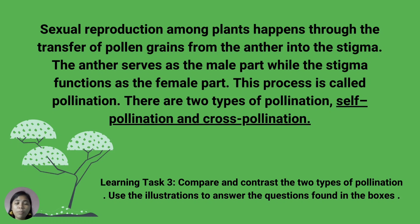Sexual reproduction among plants happens through the transfer of pollen grains from the anther to the stigma. The anther serves as the male part while the stigma functions as the female part. This process is called pollination. There are two types of pollination: self-pollination and cross-pollination.